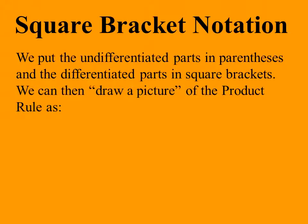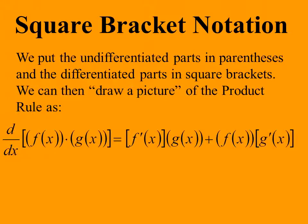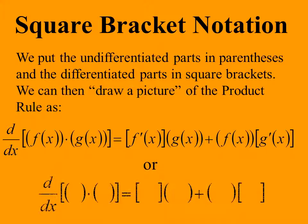We put the undifferentiated parts in parentheses and the differentiated parts in square brackets. We can then draw a picture of the Product Rule. If we remove the functions and simply write the parentheses and square brackets, the Product Rule becomes a fill-in-the-blank problem. We use this notation as a way to keep up with the bookkeeping of the Product Rule — all we have to do is keep up with what goes where.